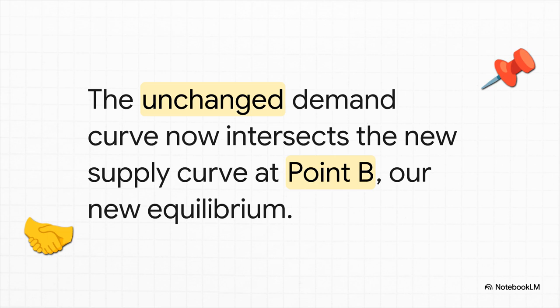Now, the demand from us, the consumers, that hasn't changed at all. So our curve stays put. But it now intersects our new supply curve at a totally different spot. This gives us our new balancing point, point B.